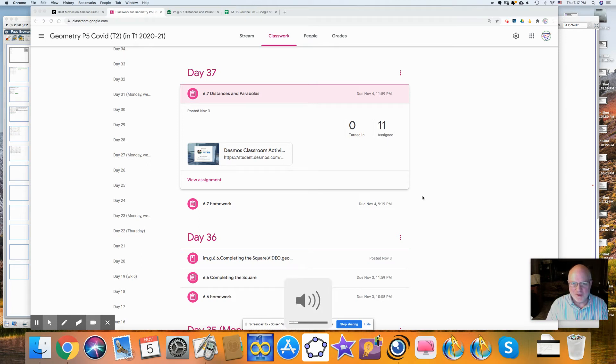Hi, this is Mr. V, and today's lesson is from the Illustrative Mathematics, Chapter 6 in Geometry, which is on coordinate geometry, lesson number 7, Distances and Parabolas.